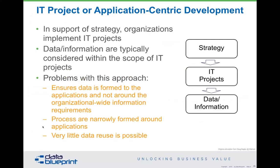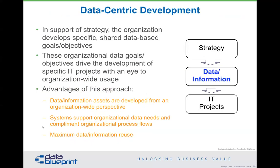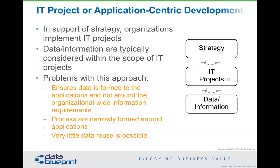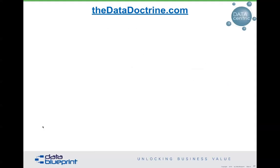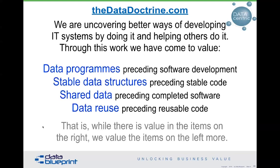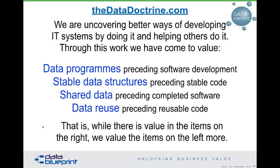Most organizations go about this process incorrectly. They start with some sort of organizational strategy, build some IT stuff, and then try to fix data in there. It simply doesn't work. What we need to do is flip that — all I've done between these two diagrams is flip IT projects and data and information in terms of where they're implemented. It may seem like a simple thing, but it is a bear to do this from a cultural perspective. The things you must understand: data has to precede software, data structures have to precede code, shared data has to precede completed software, and data reuse has to precede reusable code.